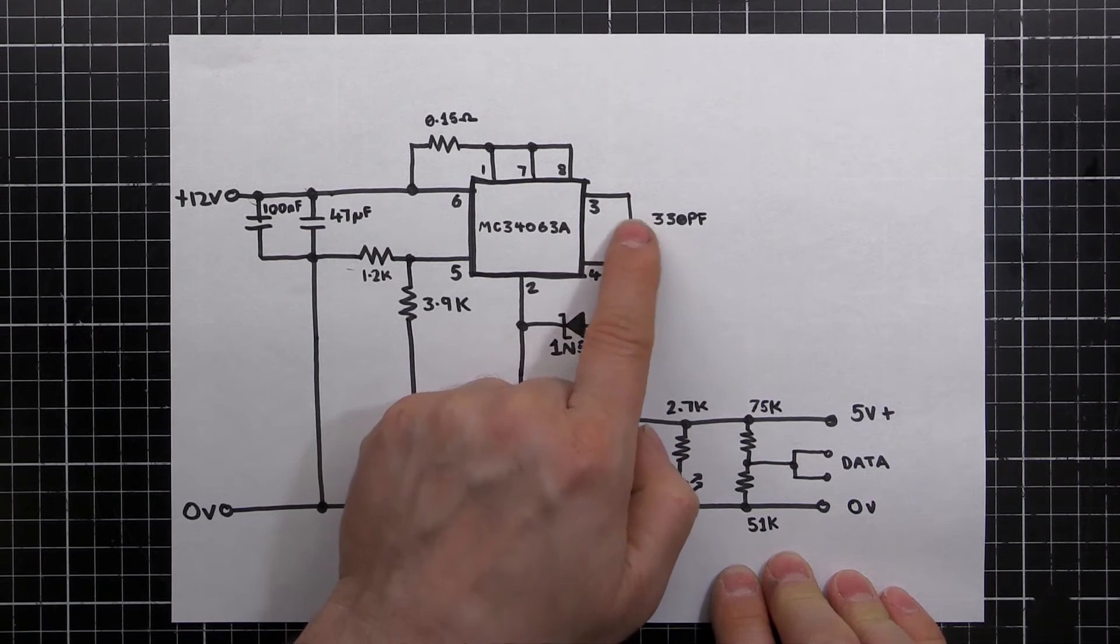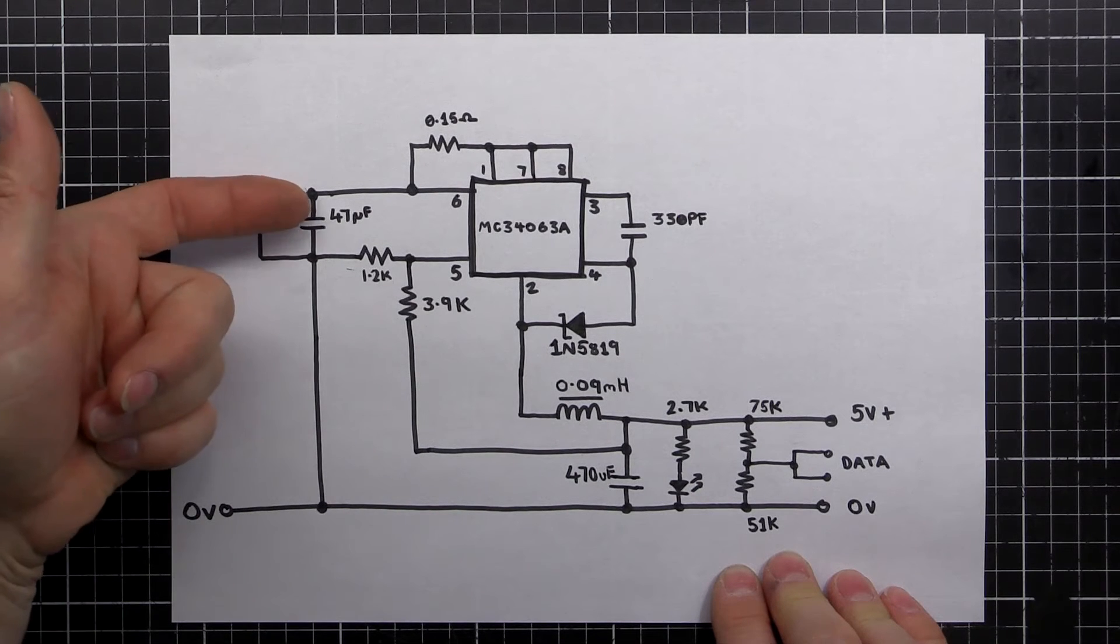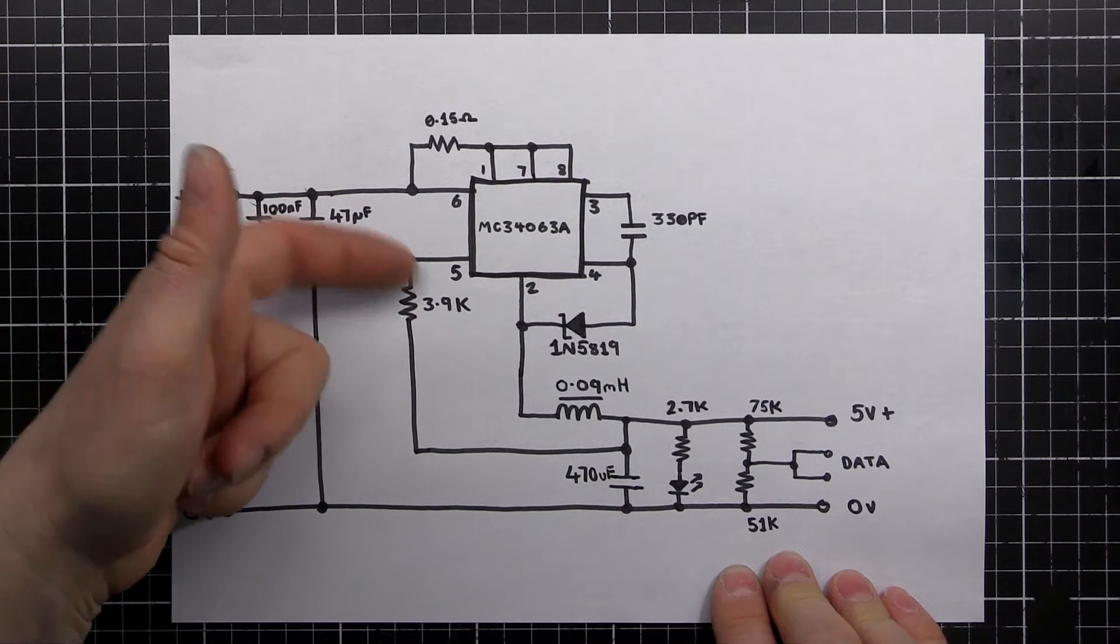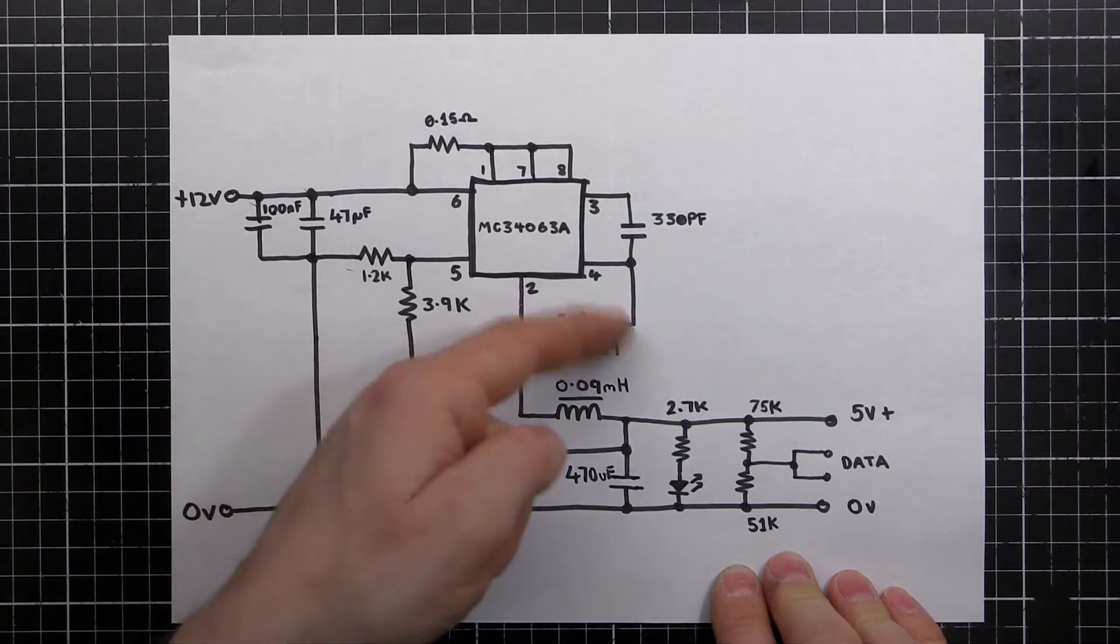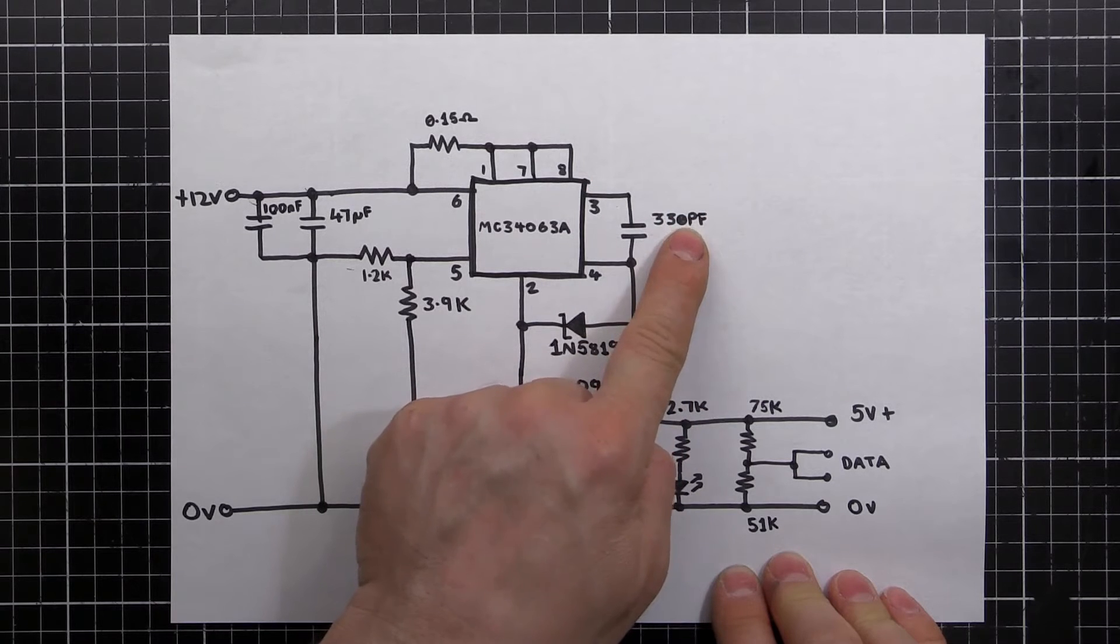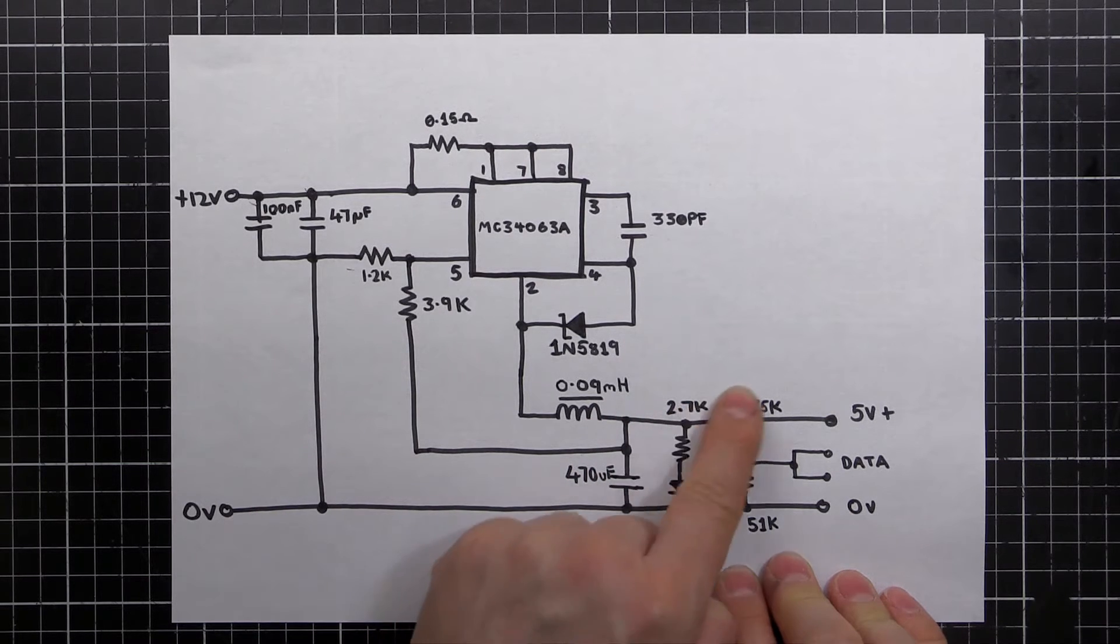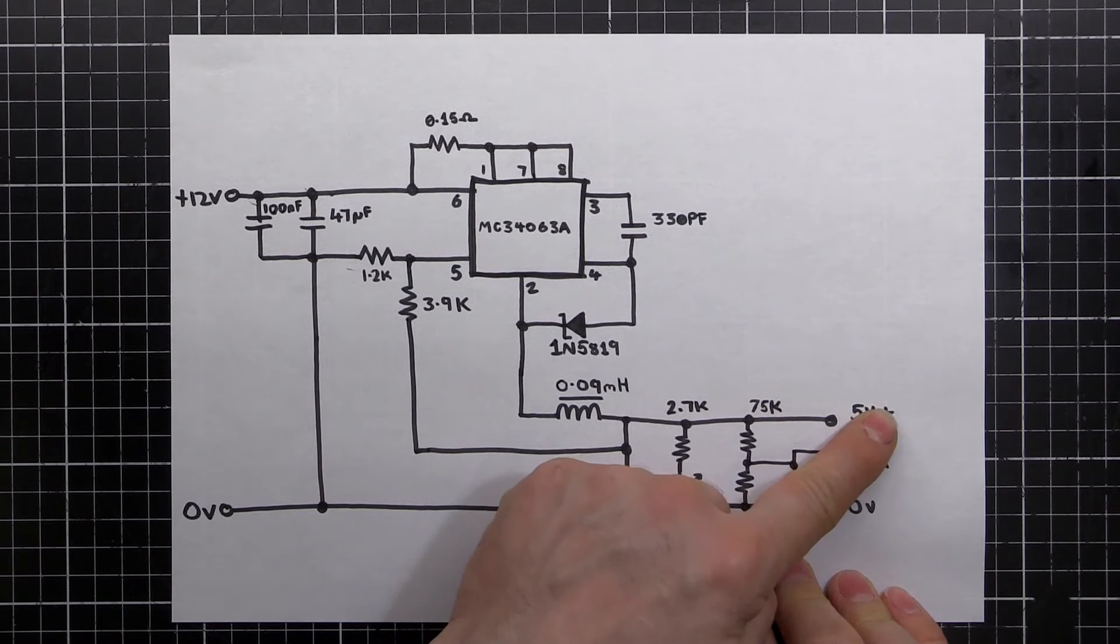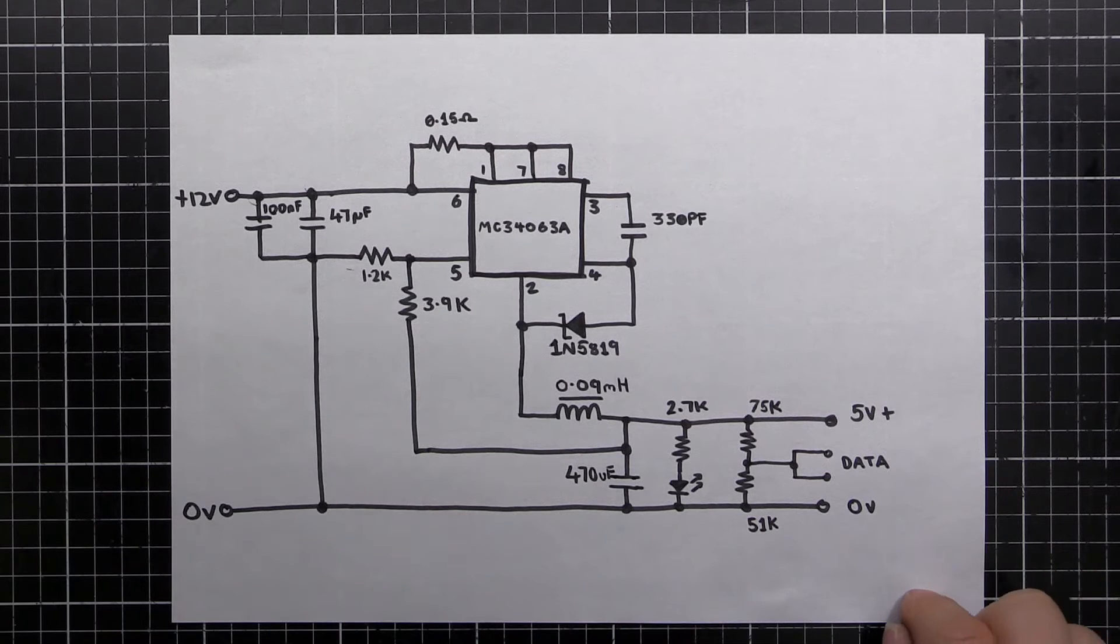And we've got just a capacitor here that's setting the switching frequency. So power comes in, it's smoothed here, it sets the output voltage here, current sensing comes through, does a switching here at the frequency defined by this capacitor, comes through, is filtered again here to make sure the output's nice and smooth. Indicator, we've got voltage here, charging rate set here, voltage out. That's all it is.